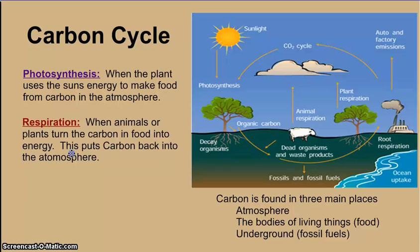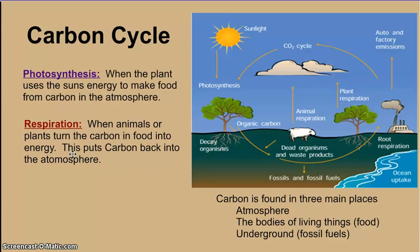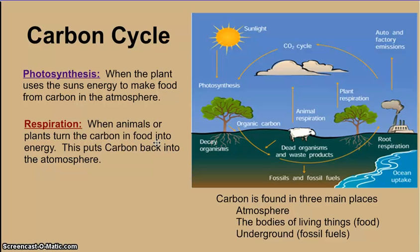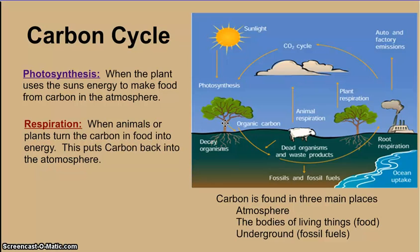The second major process is called respiration — both photosynthesis and respiration are words that will come back in the next unit, so learn them now. Respiration happens when a plant or animal burns food or turns food back into energy. The carbon that was in that food gets turned back into energy; the energy is released and lost, but the carbon goes back into the atmosphere. So respiration takes carbon from the bodies of living things and returns it to the atmosphere.